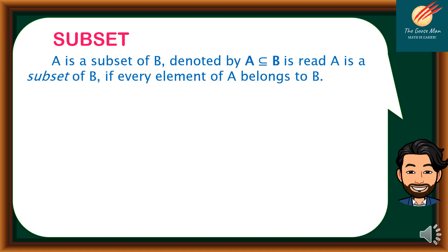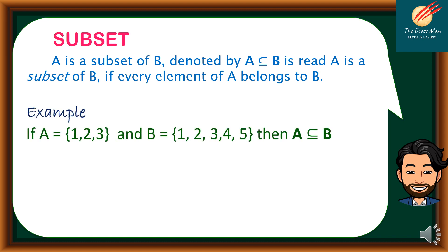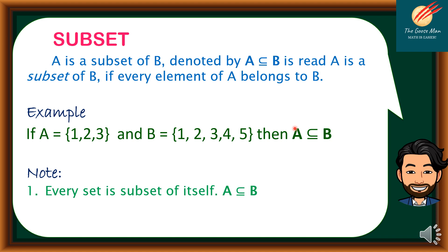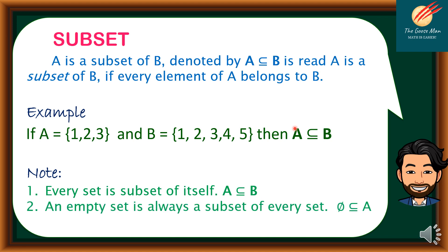Let's move on to subsets. A is a subset of B, denoted by the subset symbol, if every element of A belongs to B. For example, A = {1, 2, 3} and B = {1, 2, 3, 4, 5}. Notice that all elements of A — 1, 2, and 3 — can be found in B. Therefore, A is a subset of B. Note that every set is a subset of itself, and an empty set is always a subset of every set.